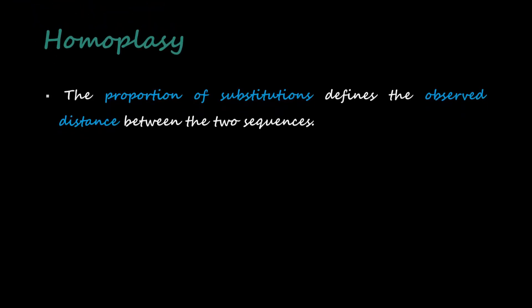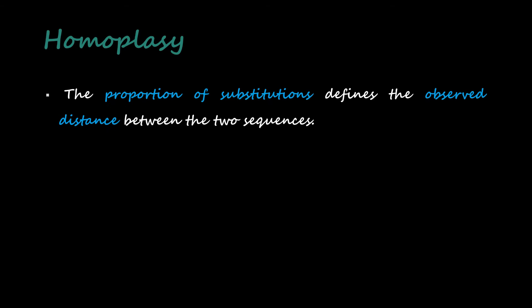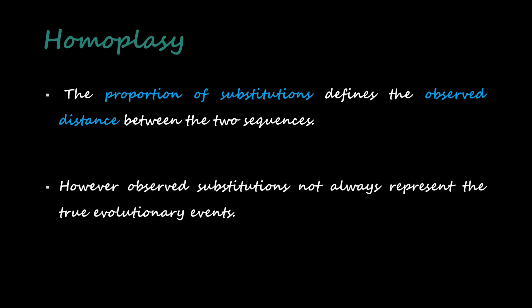Now there is a concept of homoplasy. The proportion of substitution defines the observed distance between two sequences. We know that substitutions are very common in nucleotide sequences, so the proportion of substitution actually tells the observed distance between two sequences—how much substitutions have taken place.